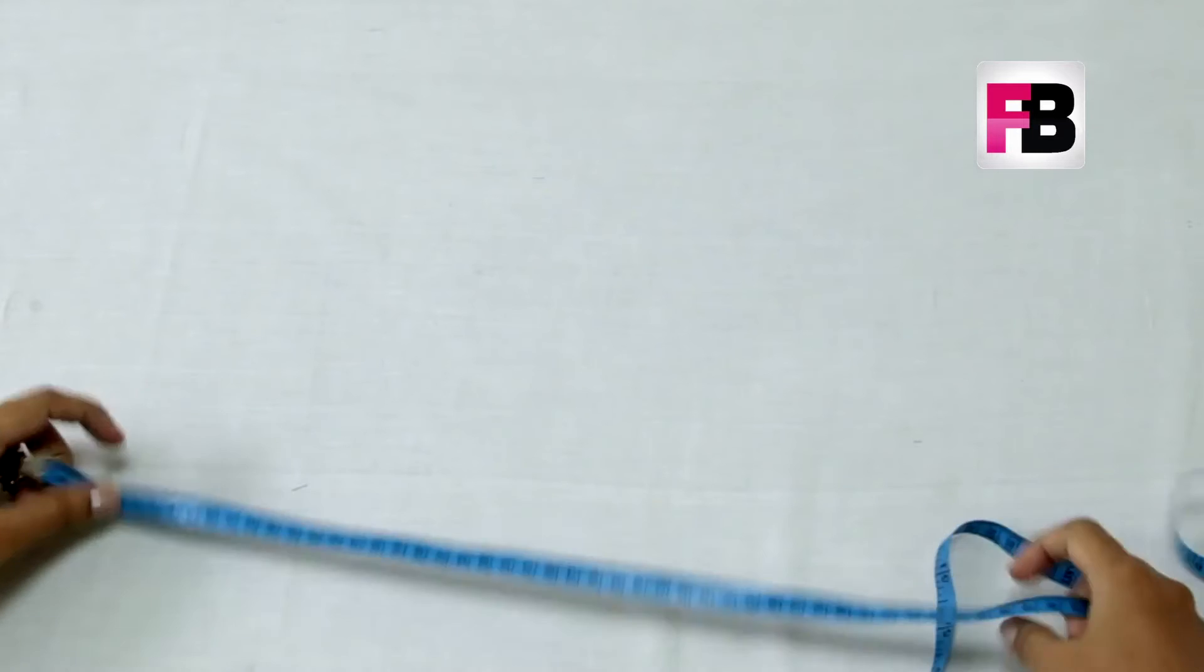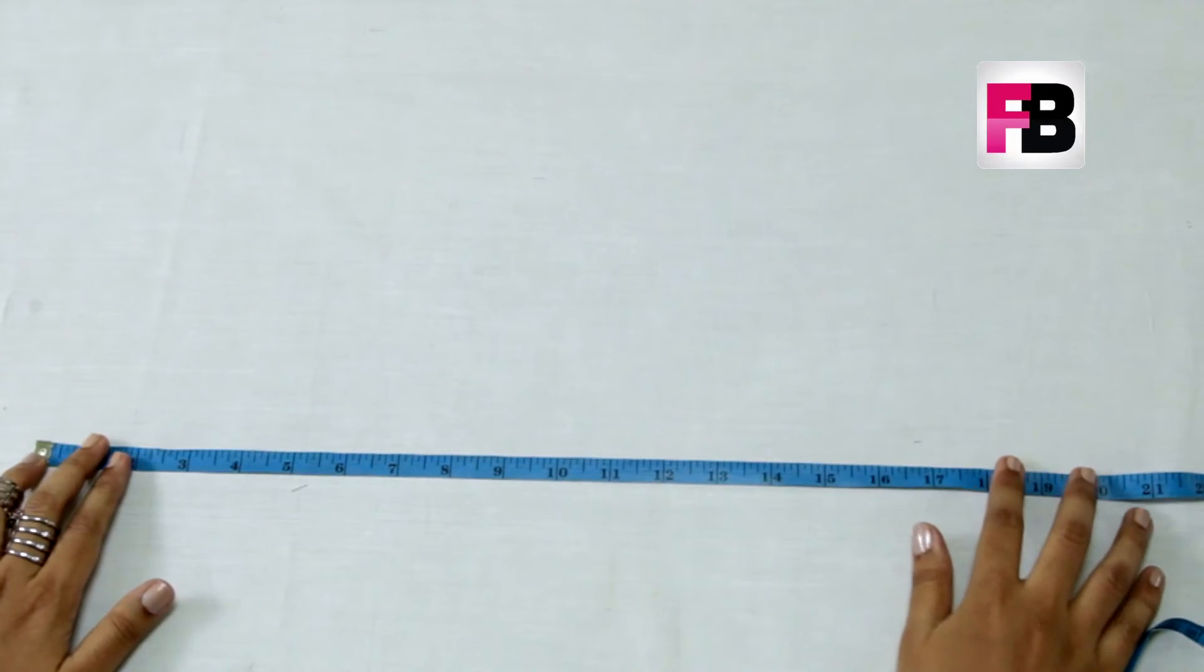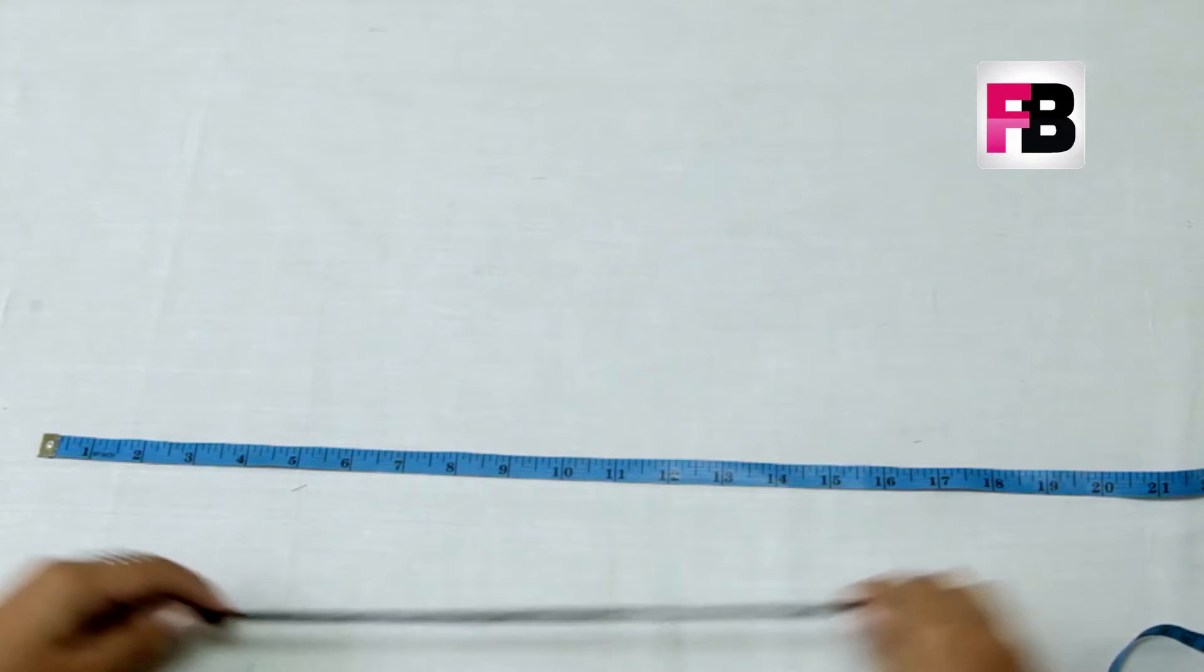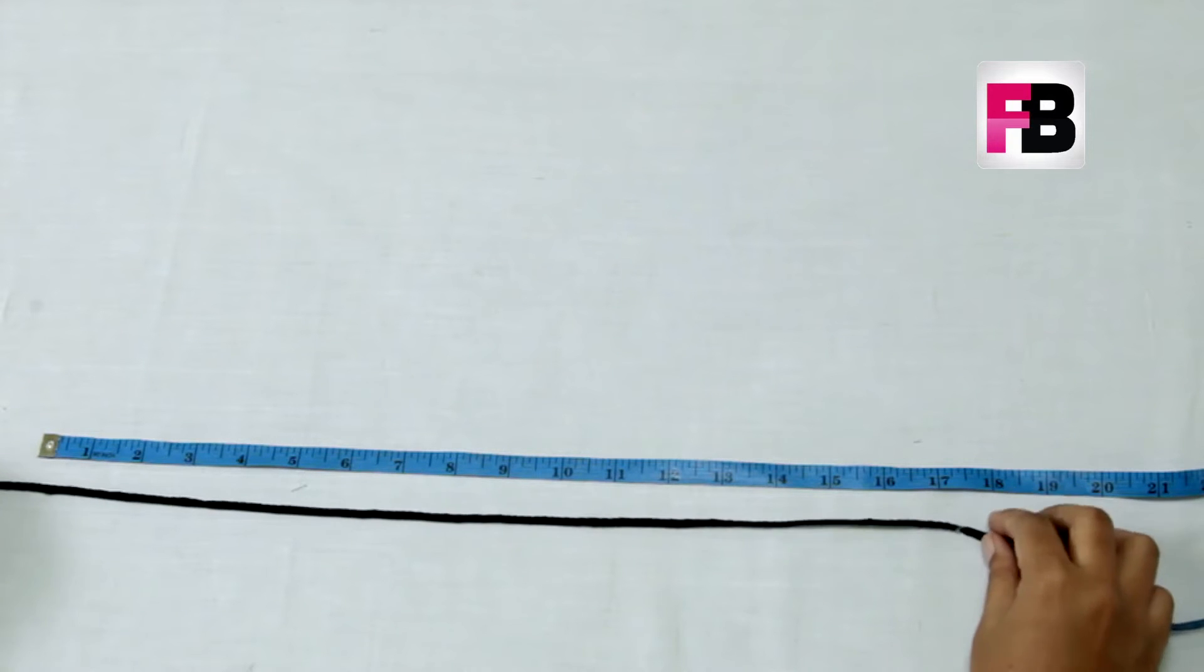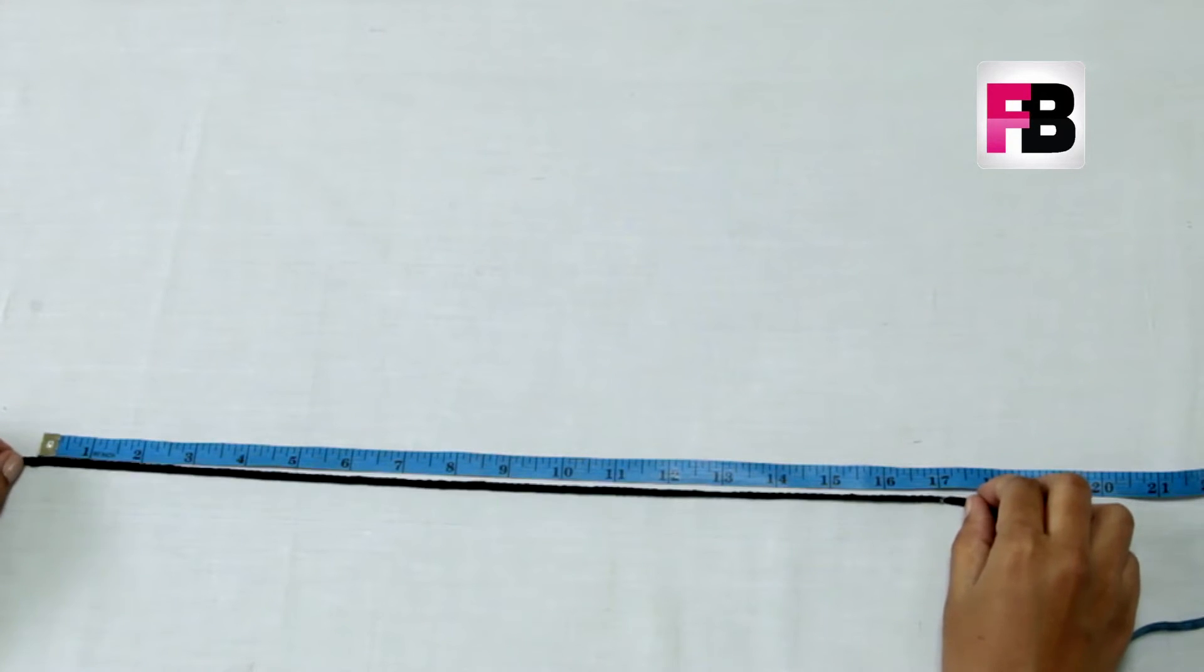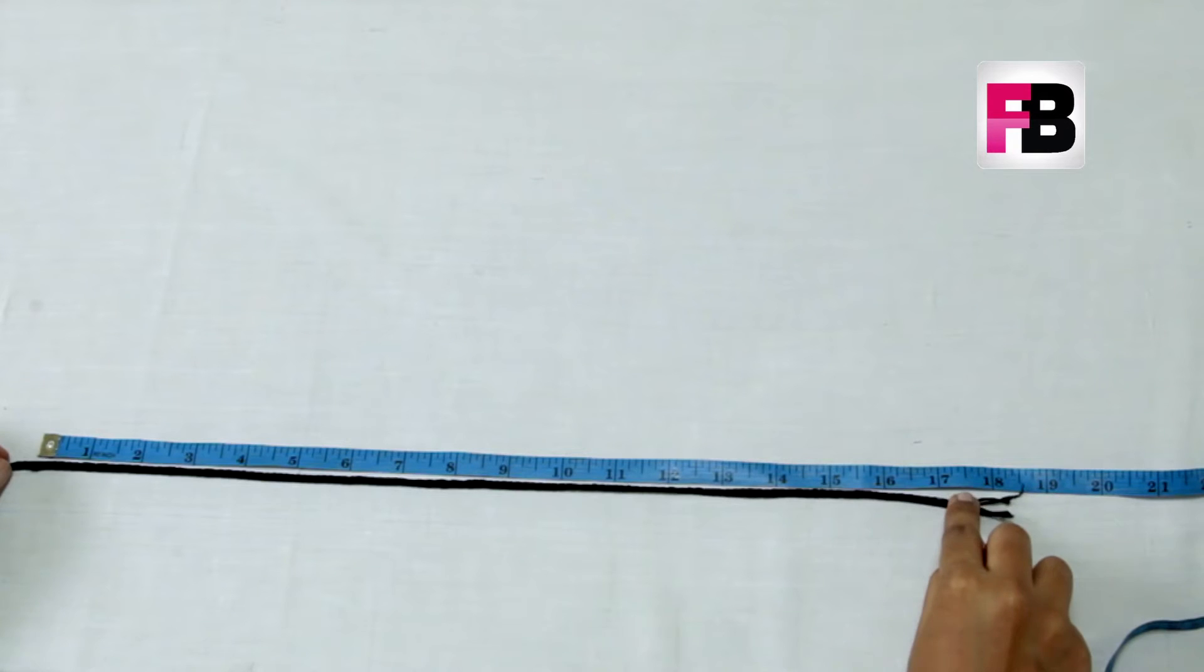First we begin by measuring our rope. 17 inches is a good enough length for a long necklace, just in case you didn't know that. So I'll measure 17 inches here.